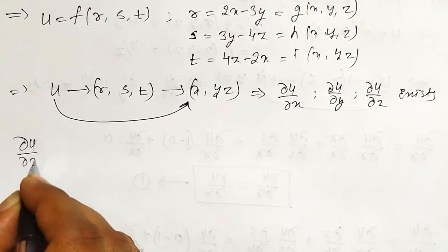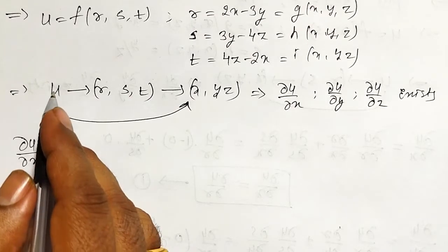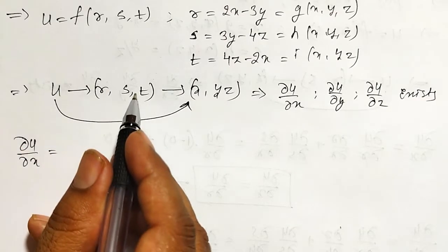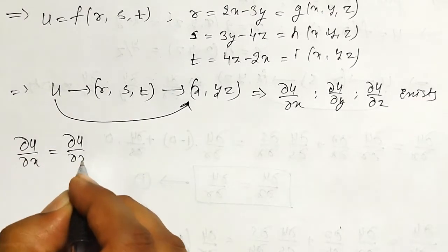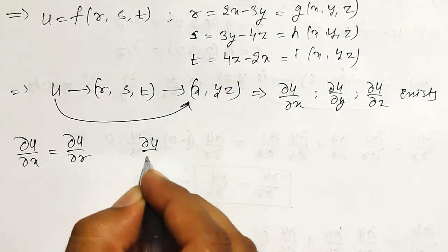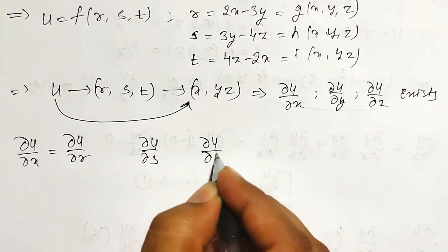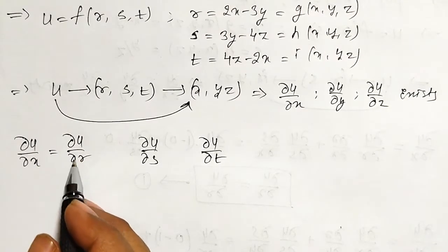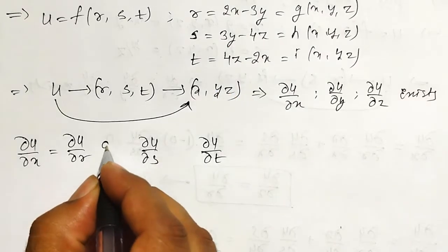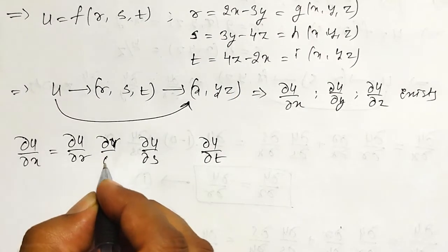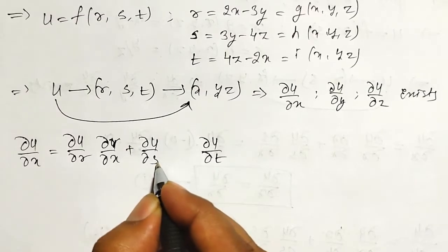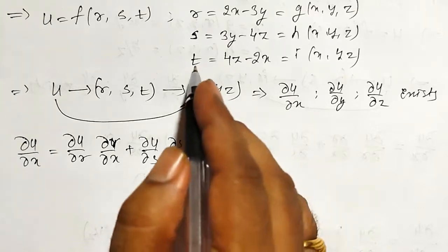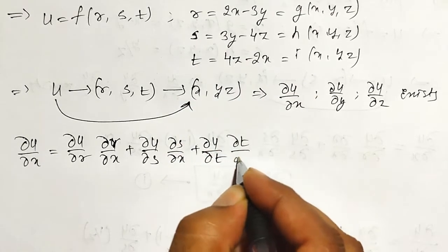Now, ∂u/∂x — u is indirectly a function of x, y, z. Therefore ∂u/∂x exists. But it is directly a function of three variables r, s, t. Therefore the partial derivative exists as ∂u/∂r, ∂u/∂s, and ∂u/∂t. But I want u with respect to x. And we know that r is again a function of x, y, z. Therefore, the partial derivative is ∂u/∂r · ∂r/∂x. S is also a function of x, y, z. Therefore, ∂u/∂s · ∂s/∂x. And t is also a function of x, y, z — so ∂u/∂t · ∂t/∂x.